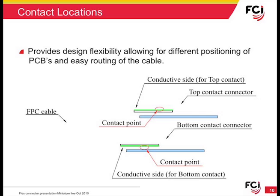When ordering a right-angle flex connector, it's important to know that there are options for top and bottom contact locations. The reason both configurations are required is that flex circuits are usually manufactured with only one side of the cable prepared with exposed conductive material. As shown in the illustration, the upper board has exposed conductors on the bottom side of the flex, while the lower board has the conductors oriented upward. Having both options available simplifies your design and ensures that the mating contacts will be in the proper location to mate with the flex circuit.